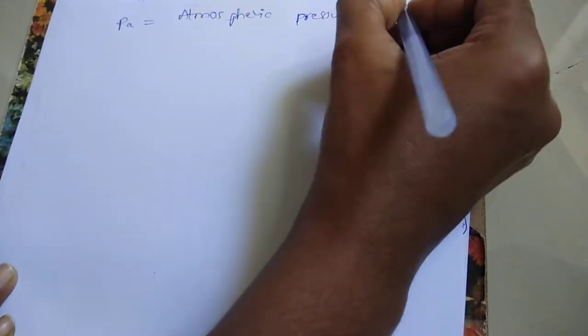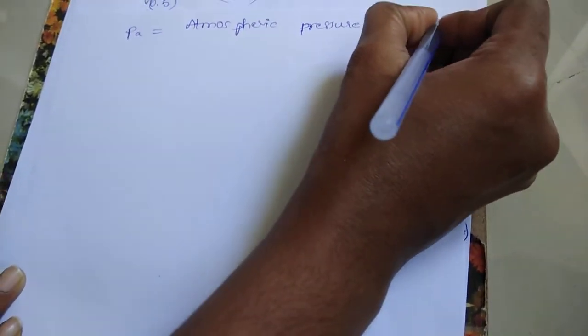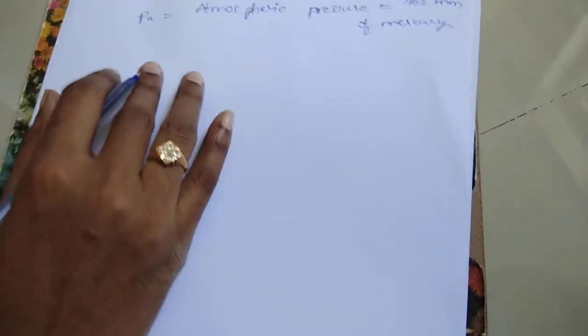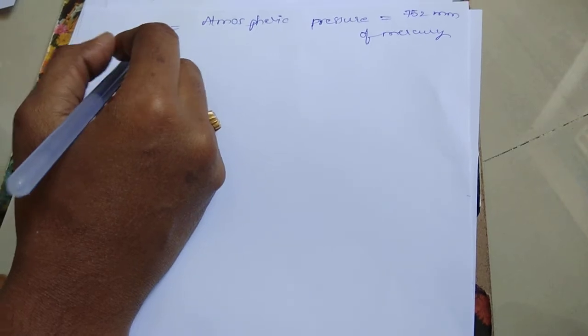Already you know the value of atmospheric pressure is equal to 752 mm of mercury. So, substitute the value of PA in this equation.